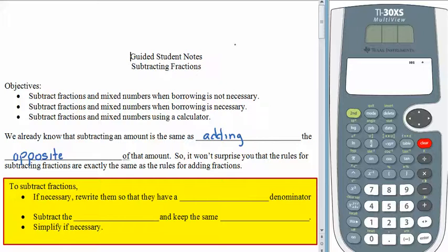For example, if we were up here, 3 minus negative 6, you already know that that's the same as 3 plus positive 6, and the answer is 9. Since subtracting is exactly the same as adding the opposite of the amount, then the rules for subtracting are the same as the rules for addition. We need the same things.